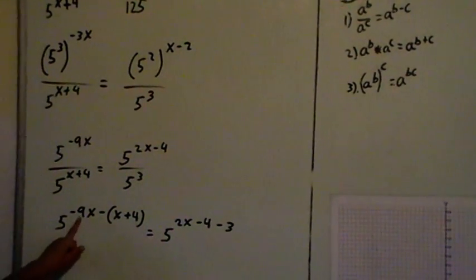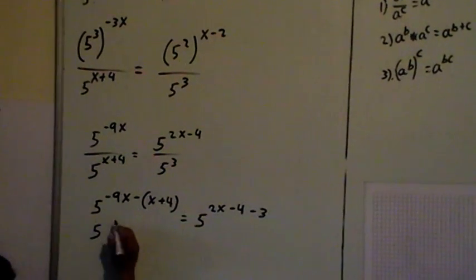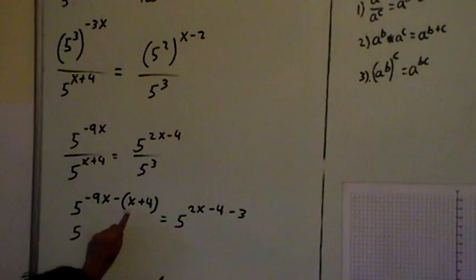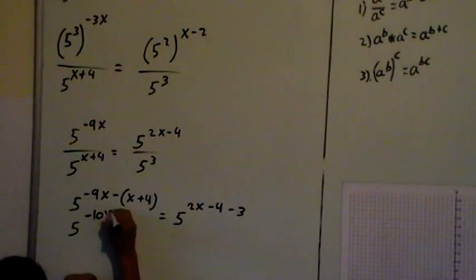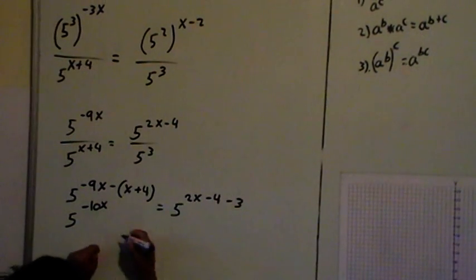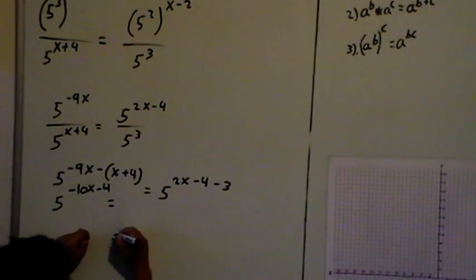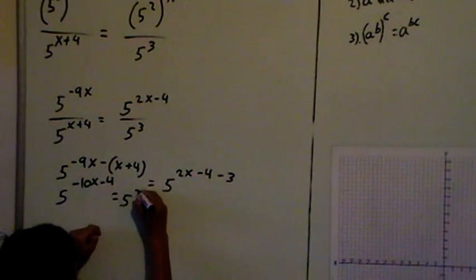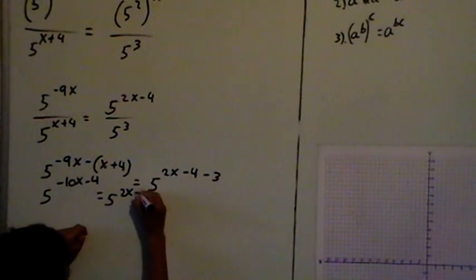I'll keep simplifying, which is 5 power minus 9x minus x, which is minus 10x, then minus 4, equals 5 power 2x minus 4 minus 3, which is minus 7.